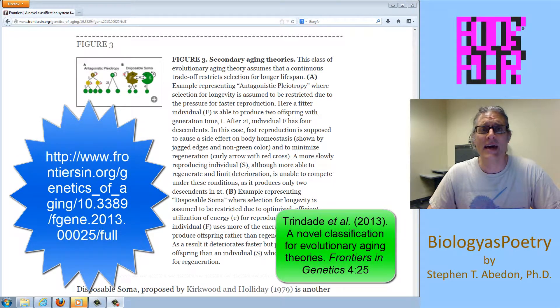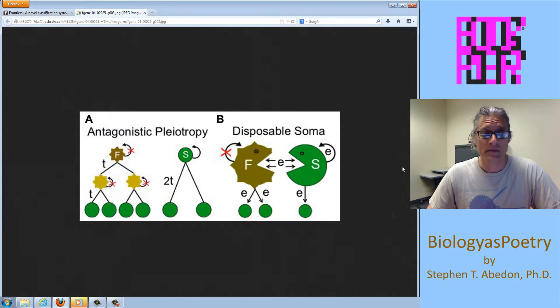Shown here is the concept of antagonistic pleiotropy as it applies to aging. What we have here is basically an individual that is fitter because it can produce more offspring faster than this individual here.